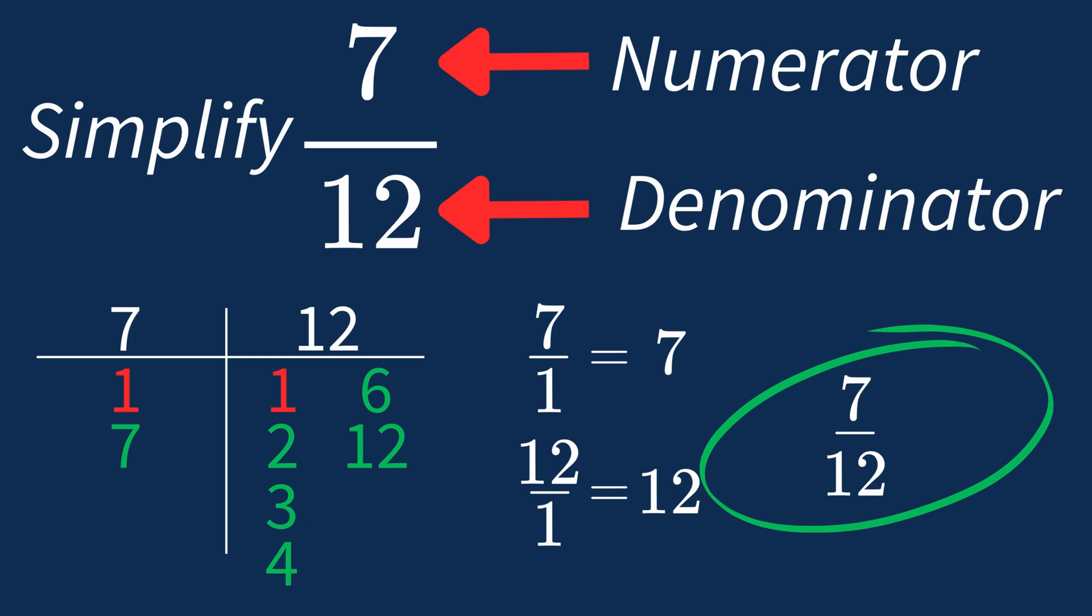In future, if the largest common factor is 1, you know that fraction is already in its simplest form.